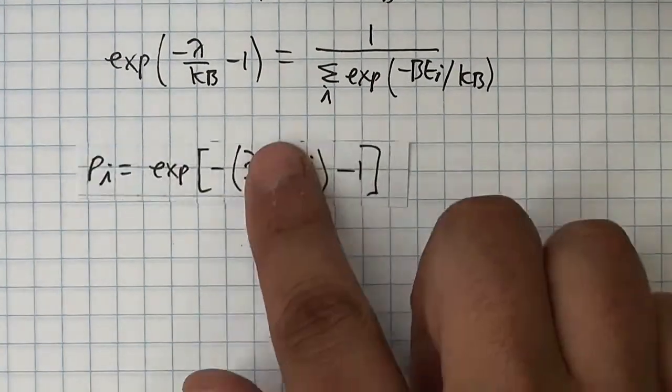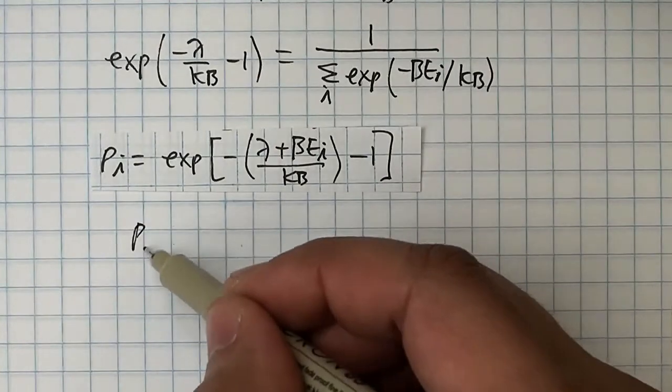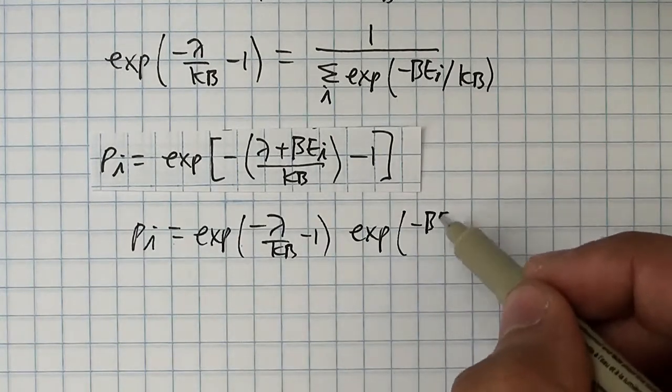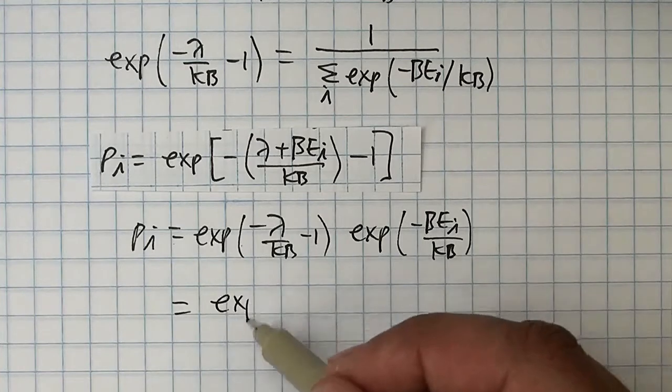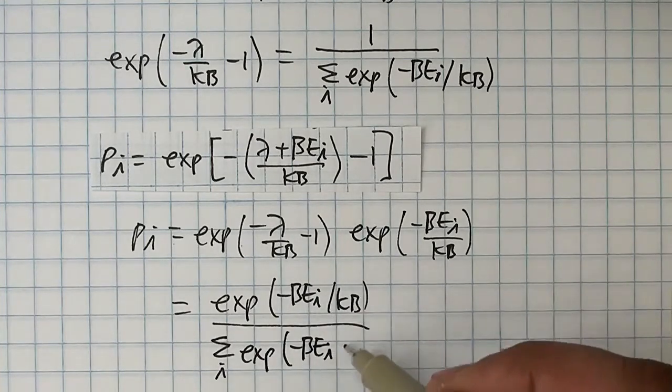The left-hand side of this equation, exponential of minus lambda over kb minus 1, is just the form that lambda takes in pi, so it's very easy to eliminate it. We can make this clear by splitting the pi up in this way. When we do that, voila, it looks like we're done.